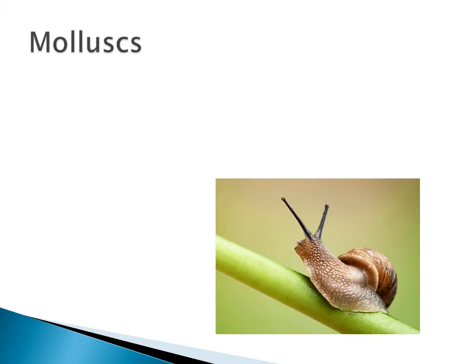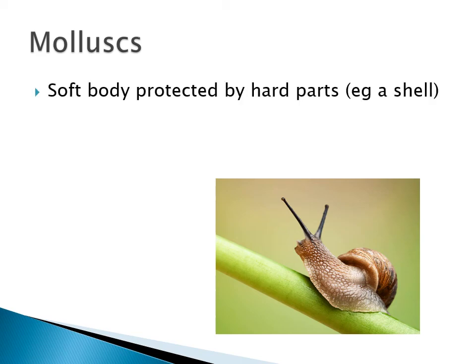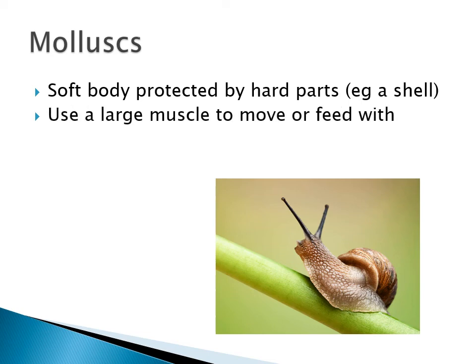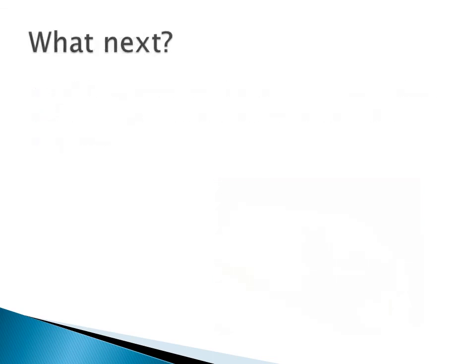The last group is the mollusks. A snail is a good example — they have soft bodies and part of the body can be housed in a shell. If frightened, they can curl up within the shell for protection. They also have a large muscle which they use to move along. Examples include snails, limpets, mussels, and cuttlefish — all different examples of mollusks.